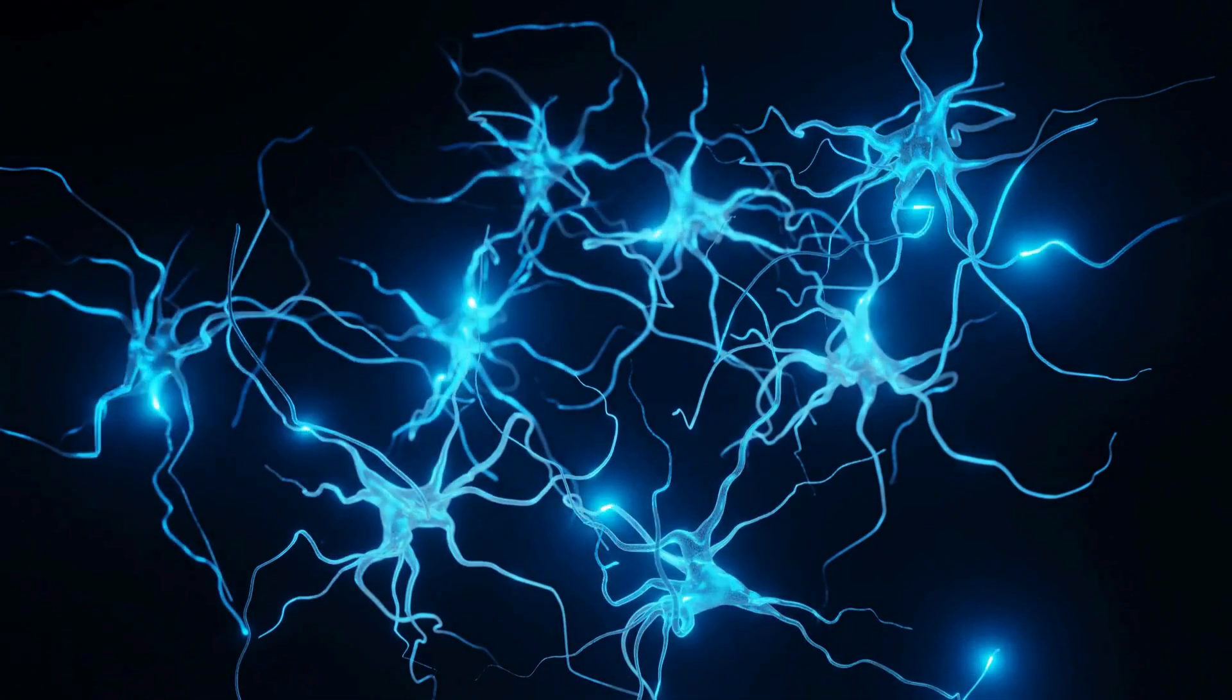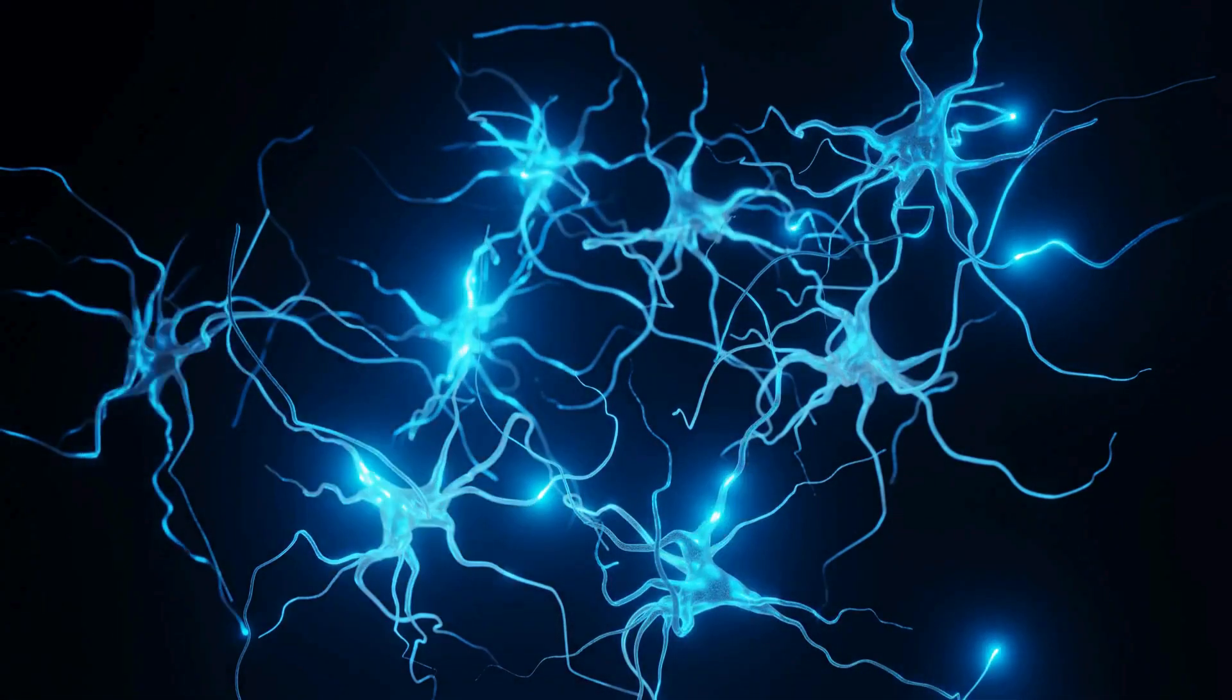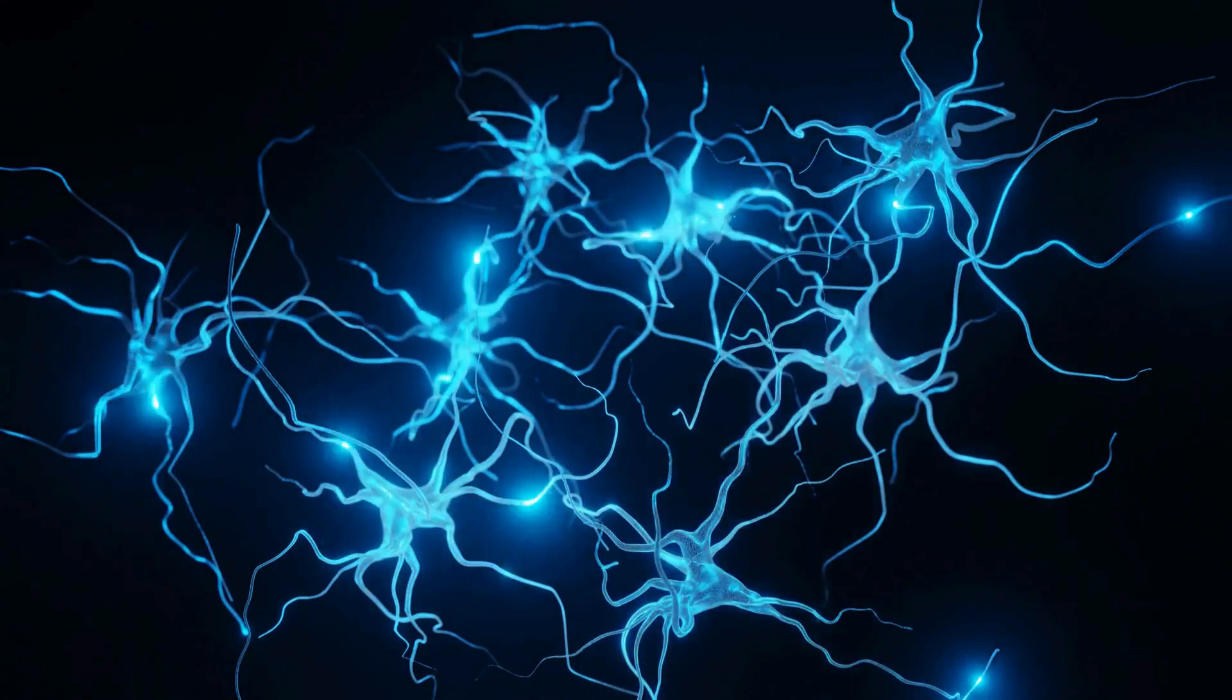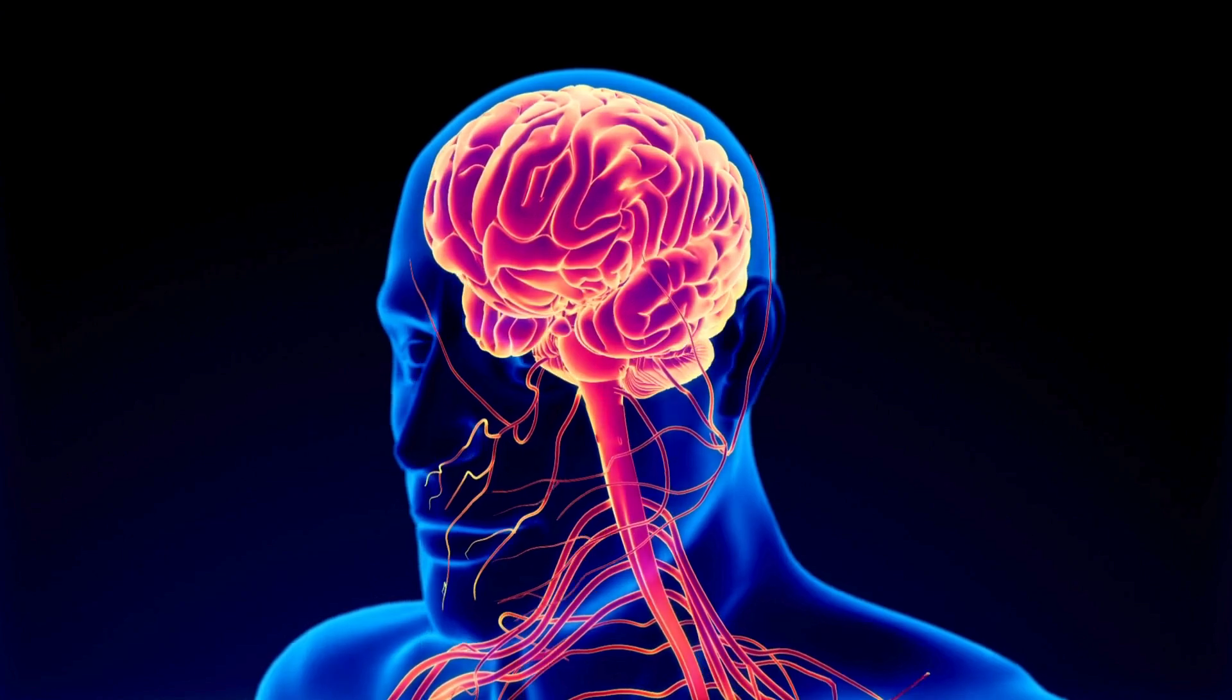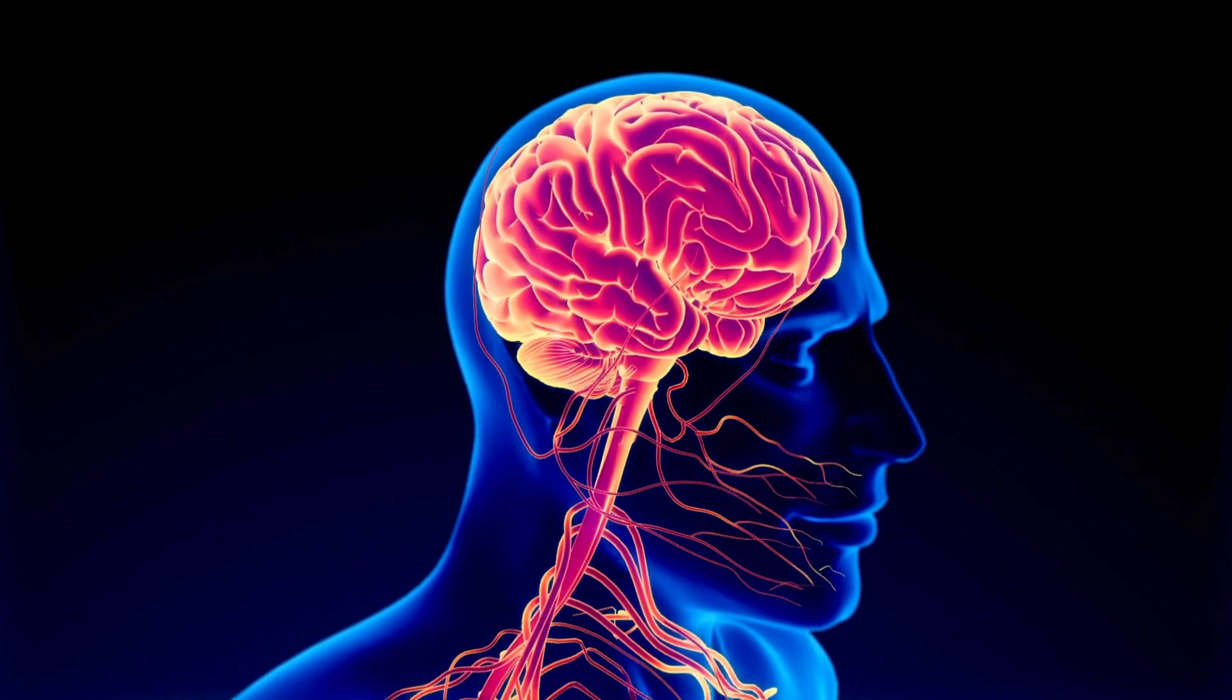Without myelin, nerve impulses would be significantly slower and less efficient, which could lead to communication problems between neurons and affect various functions of our body. Therefore, oligodendrocytes play a crucial role in maintaining the health and function of the nervous system.